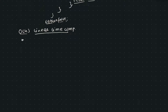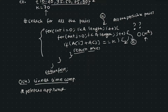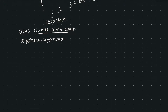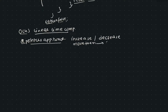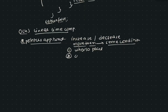Here comes the two pointers approach to the rescue. This naive algorithm does not take advantage of the array being sorted, but we can make good use of it. We can have two pointers and increase or decrease them based on some condition — that means we can move them based on some condition. We need to decide two things: where to place these pointers, and the conditions to move them.